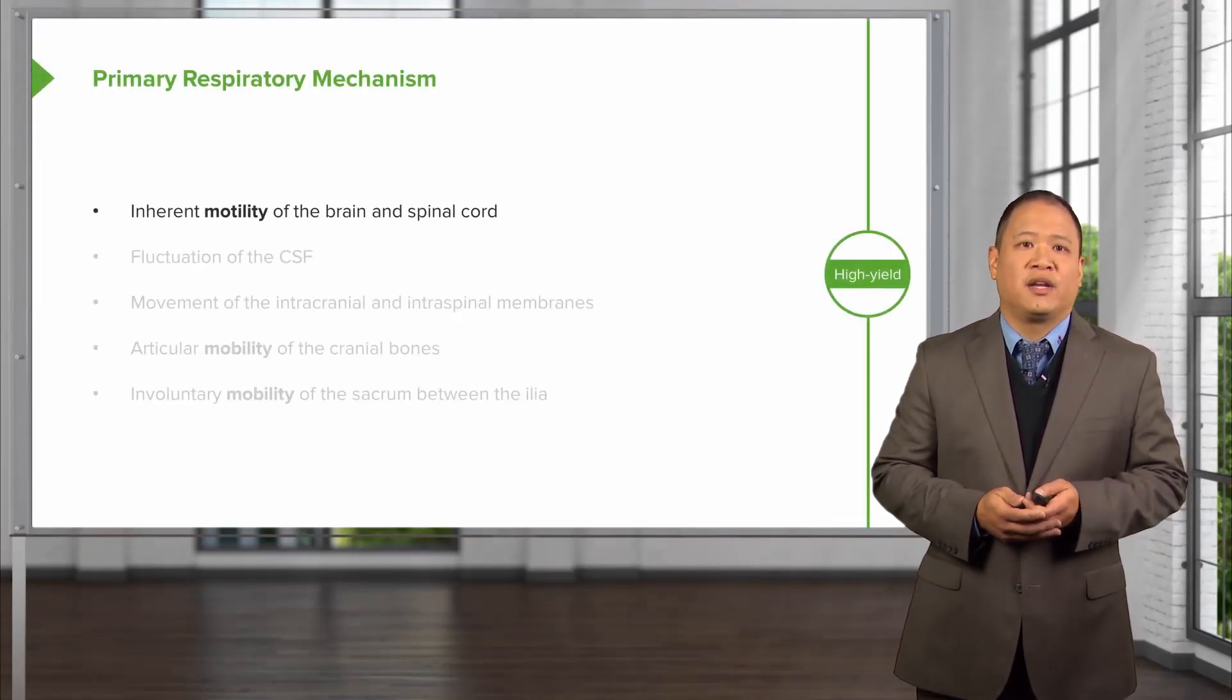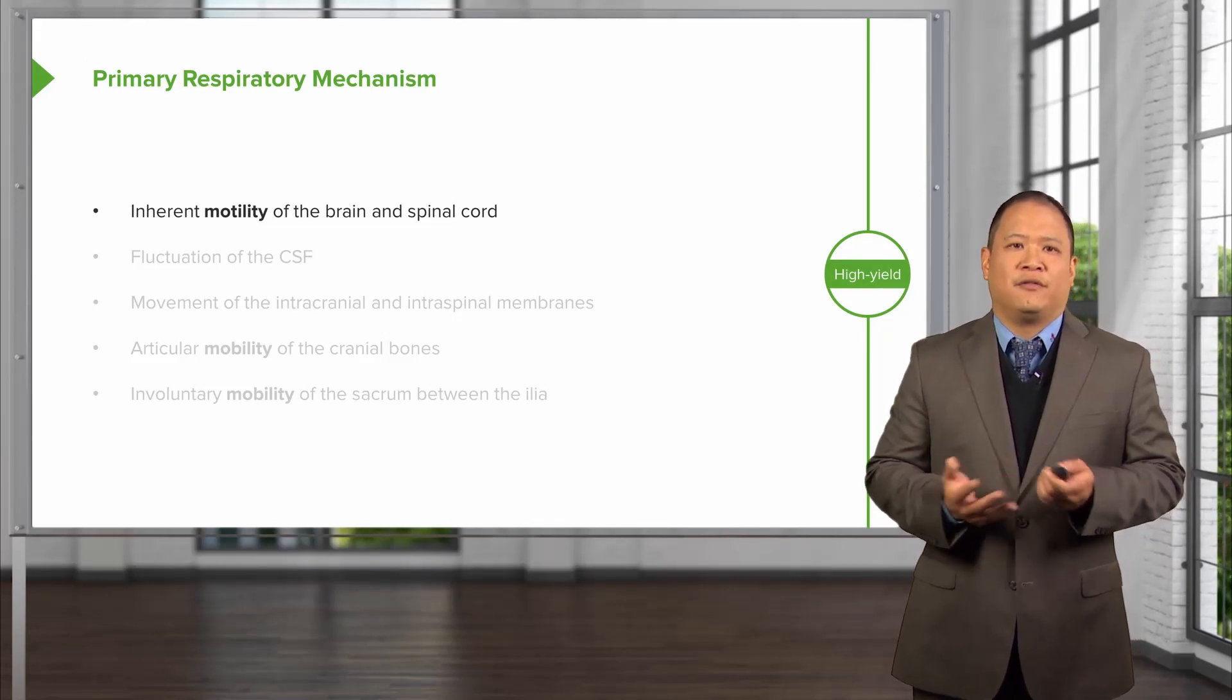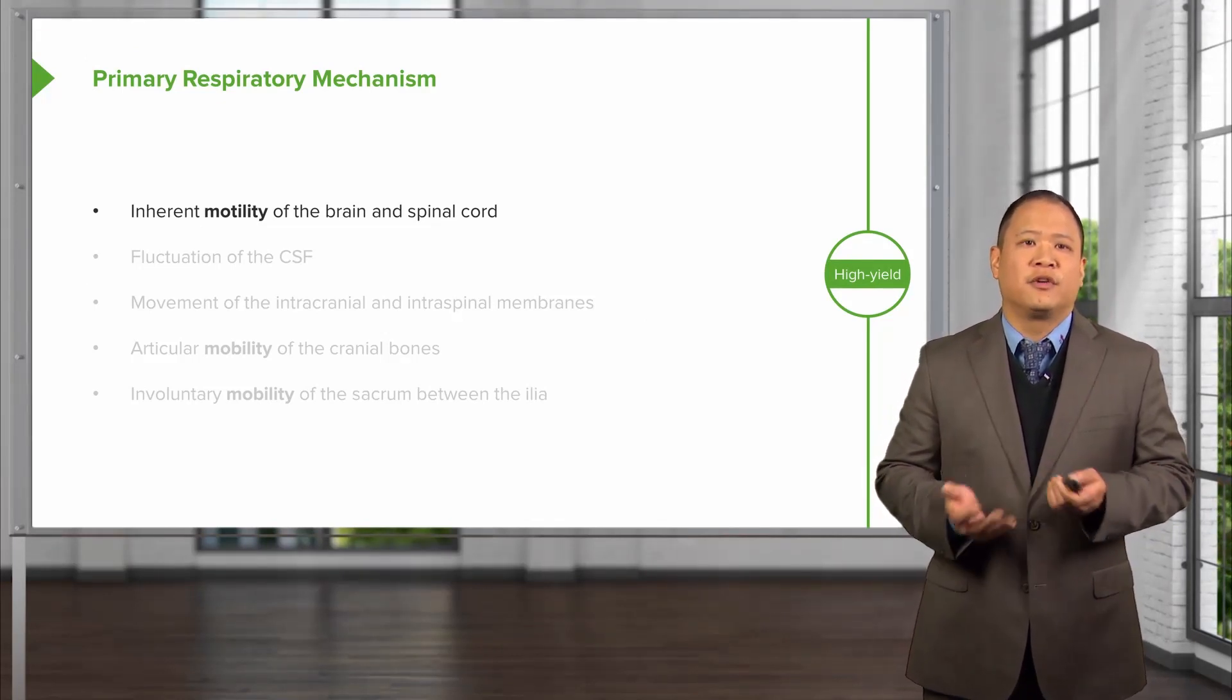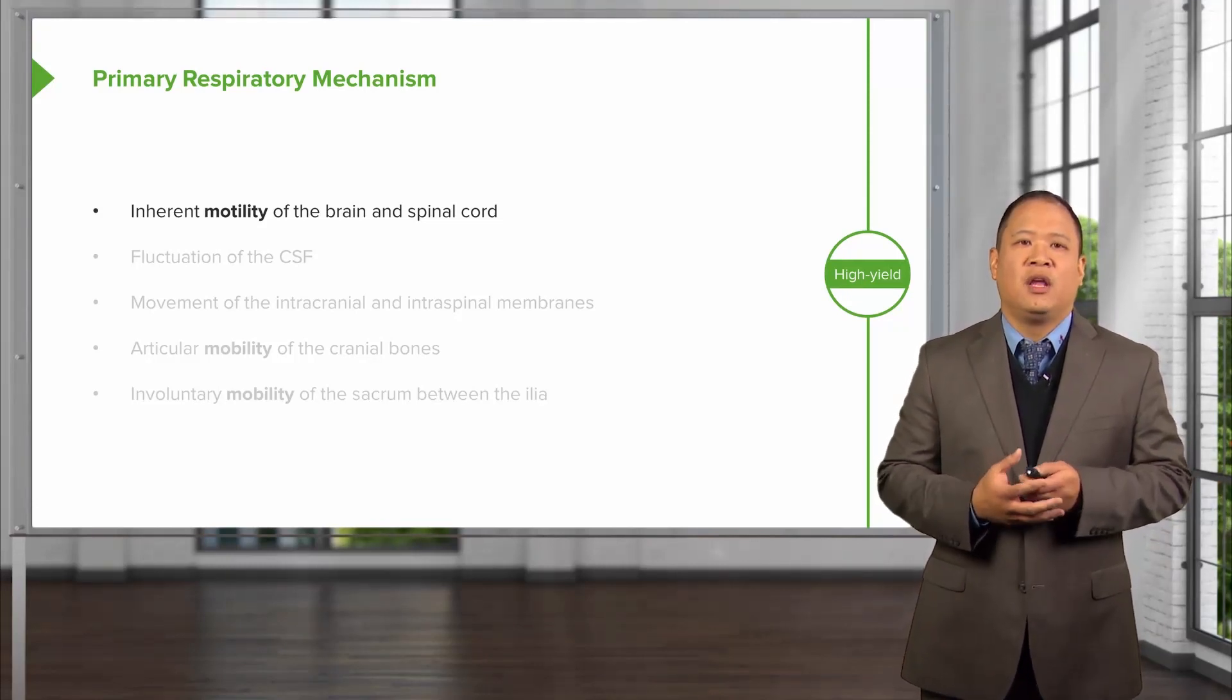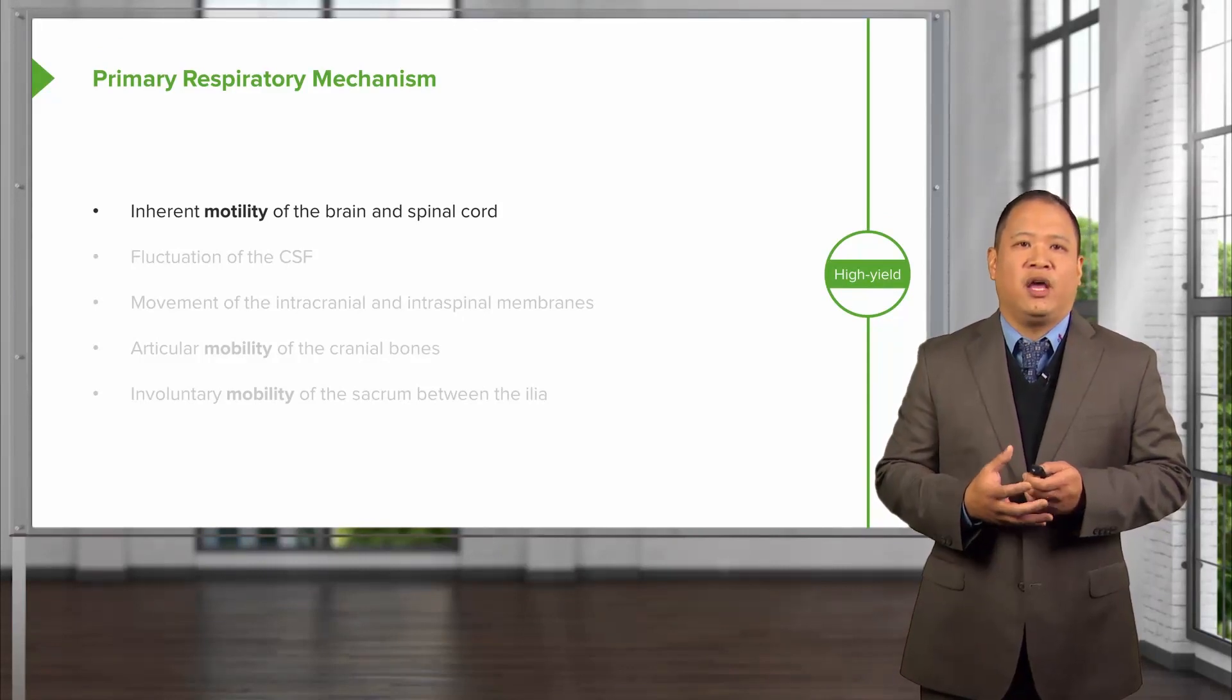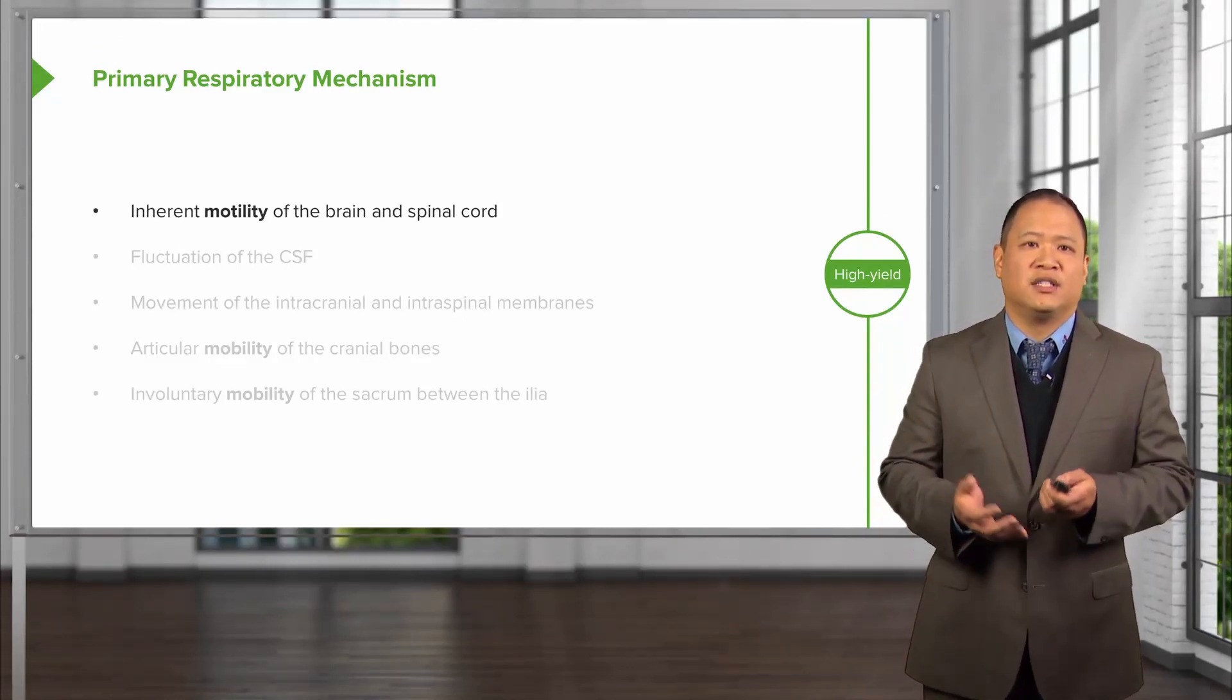The primary respiratory mechanism is based on five basic phenomena. The first one is that there's an inherent motility of the brain and spinal cord. There is an expansion and contraction of the brain and spinal cord, and there's a movement present since birth.